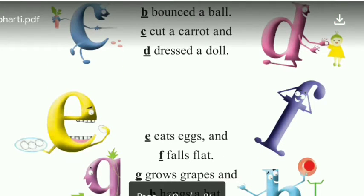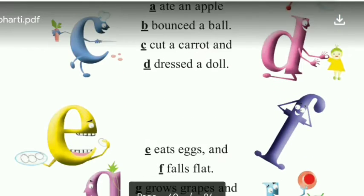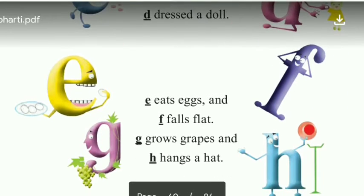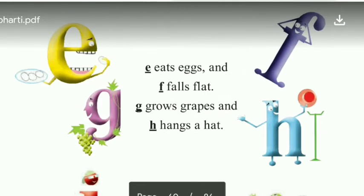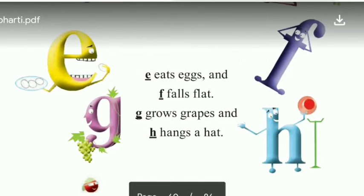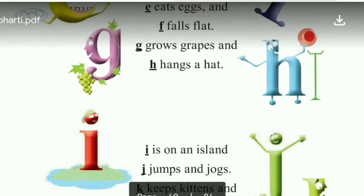E eats eggs. Letter E kya kar raha hai, egg kha raha hai. And F falls flat. Letter F gir ja raha hai, fall ka matlab hota hai girna. G grows grapes. Letter G kya kar raha hai, grapes ko grow kar raha hai. And H hangs a hat. H kya kar raha hai, hat ko hang kar raha hai, utha raha hai. Hang ka matlab hota hai latka na.